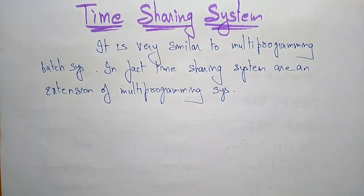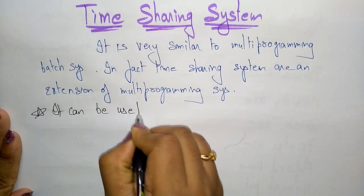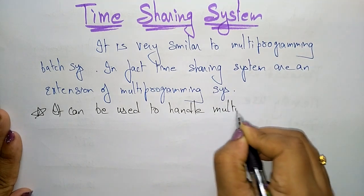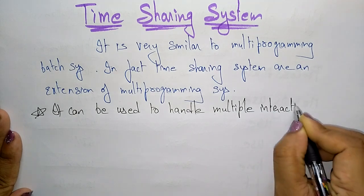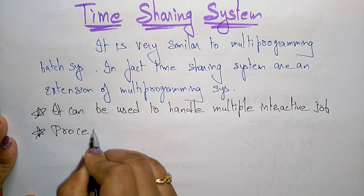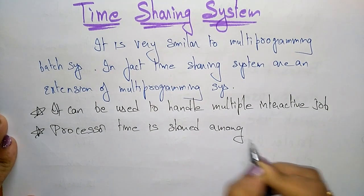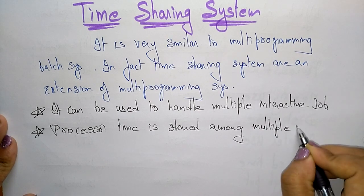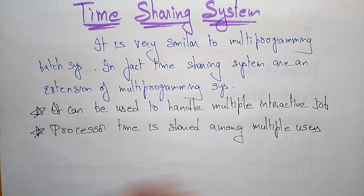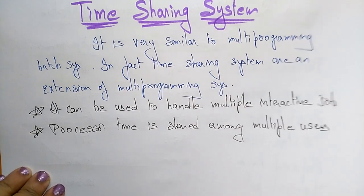So what features does it add? It has the ability to handle multiple interactive jobs. Here the processor time is shared among multiple users. That is the key difference between time sharing and multi-programming. Just see that difference and you will understand what feature was added to multi-programming to make it a time sharing system.